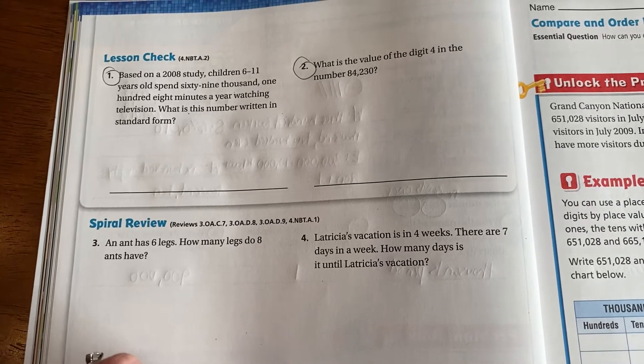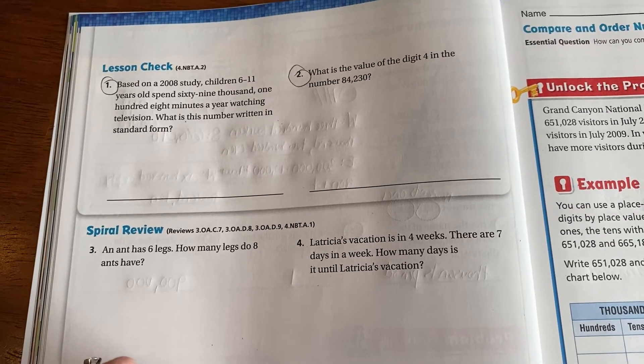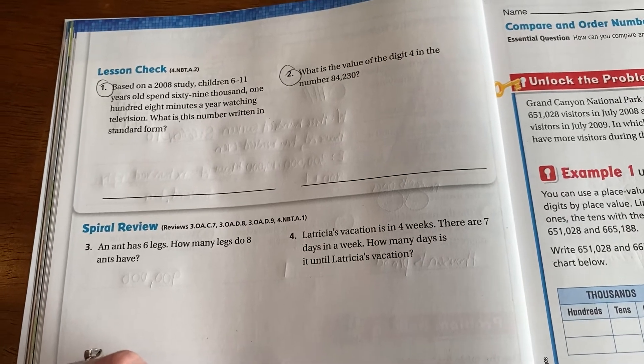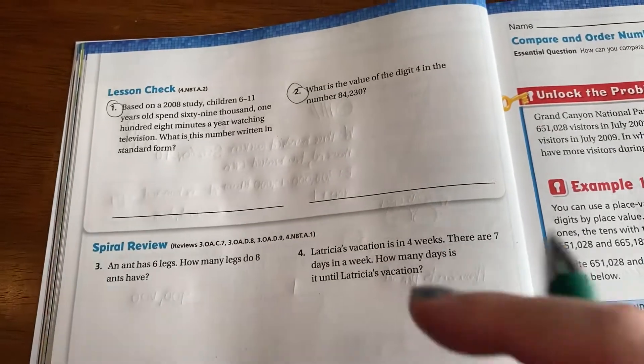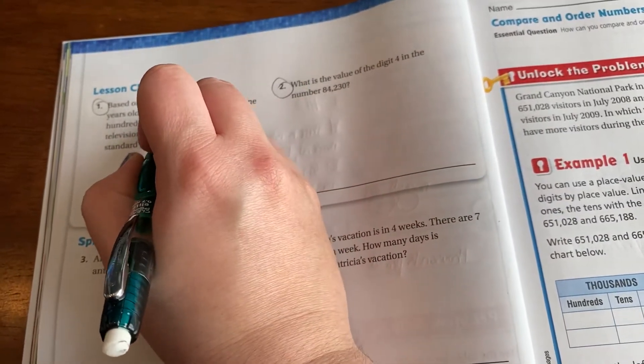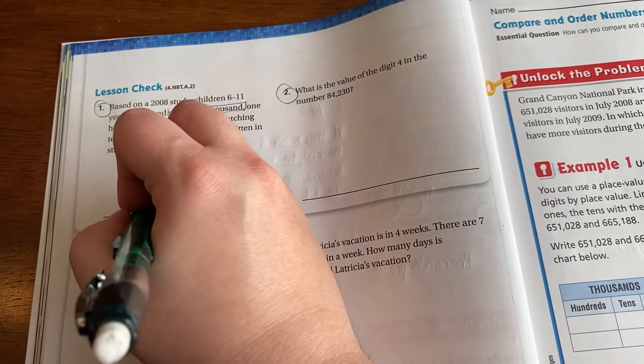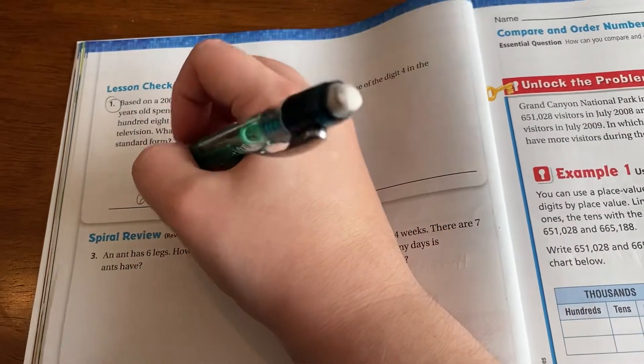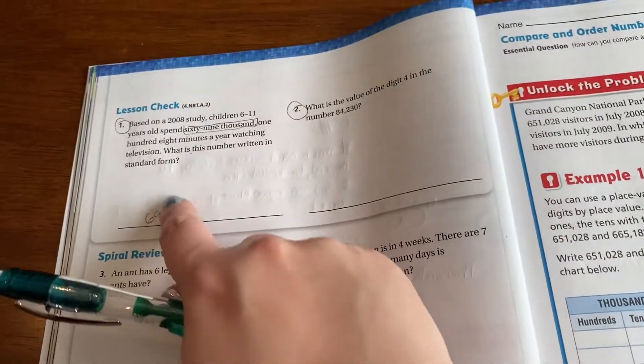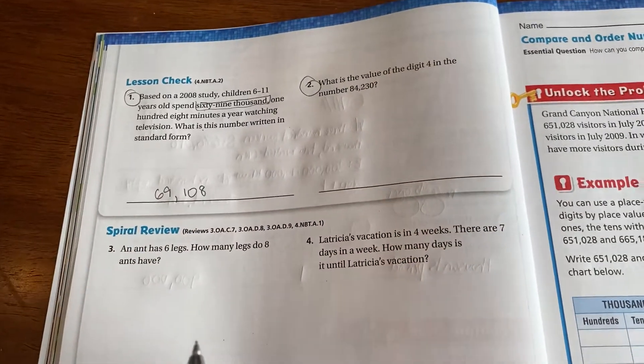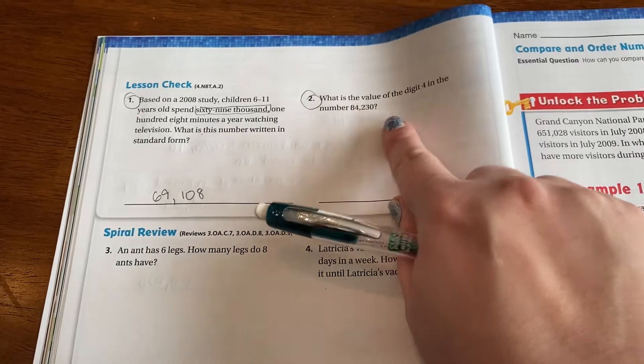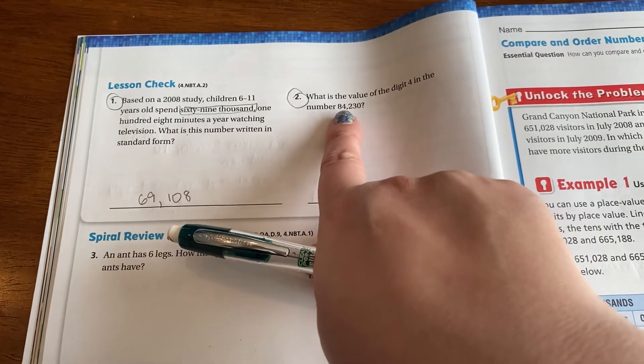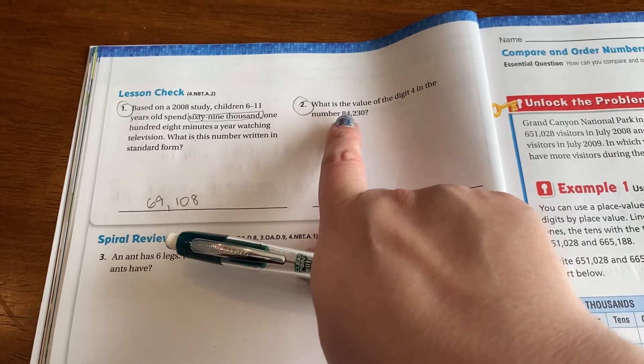So this is based on a 2008 study. Children 6 through 11 years old spend 69,108 minutes a year watching television. Holy cow. What is this number written in standard form? Sweet. So we're going back to standard form. So we're just going to take it one section at a time. So here's the thousand section right here. So I'm going to do those first. 69,000. So I'm going to do 69,000 comma to represent the separation and periods. 108 minutes a year. So 108. It's not 180, which is plain old eight. So that's why there's a zero in the tens place.